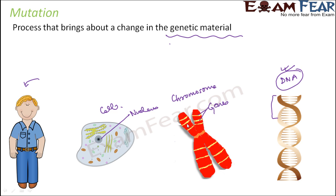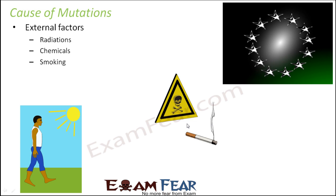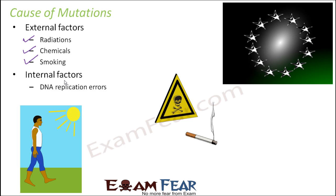That is the concept or basis of mutation breeding. What can cause mutation? There are many external factors that can cause mutation, like radiations — ultraviolet radiations or x-rays — strong chemicals, or smoking. All these are factors which can bring about a change in the genetic material. There are many internal factors as well, such as DNA replication errors. According to the central dogma of molecular biology, protein synthesis takes place from RNA.